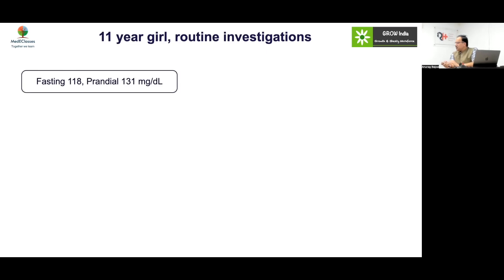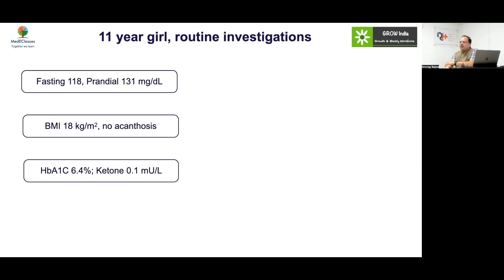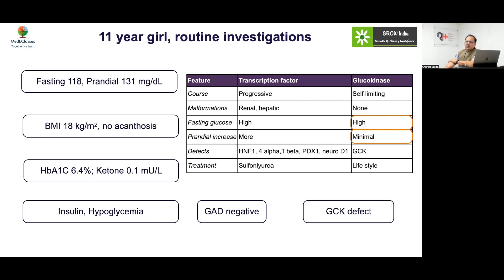Case 9: An 11-year-old girl on routine investigations. Fasting blood sugar 118, 2-hour postprandial 131, lean, no acanthosis. This is pre-diabetes — but a lean individual developing pre-diabetes is notable. HbA1c was also in the pre-diabetic range. Family history was relevant: when insulin was given, she developed hypoglycemia. Her mother and maternal aunts had the same picture, and sugars only shot up significantly during pregnancy. This was a classical case of GCK deficiency (glucokinase MODY).